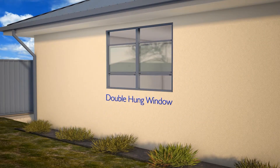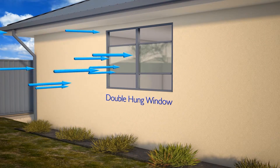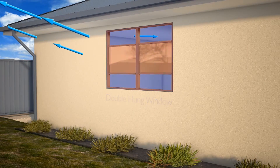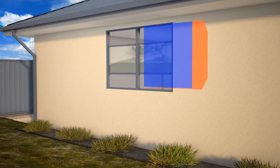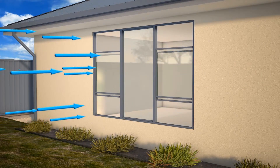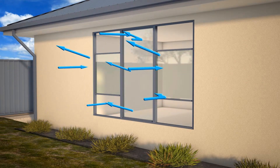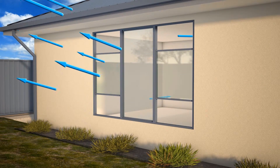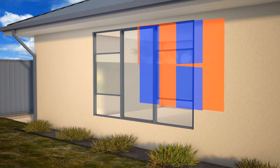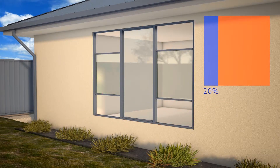Even when fully open, the sashes of double hung windows block half of the window area from allowing ventilation. Increasing the size of double hung windows introduces fixed panes, which further reduces their ventilation benefits.